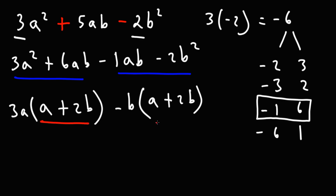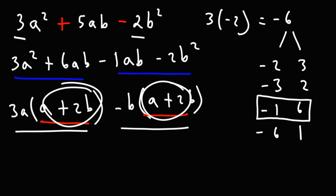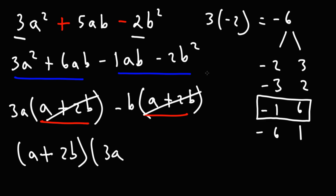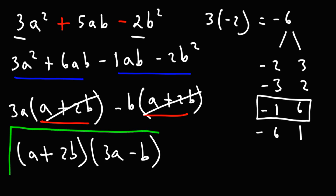Notice that these two factors — (a + 2b) — are identical. When you see that, it tells you that you're on the right track. We factor out what's in the parentheses, a plus 2b. Taking out a plus 2b from the first term leaves 3a, and from the second term leaves negative b. Therefore the answer is (a + 2b)(3a − b).